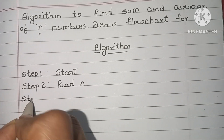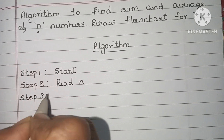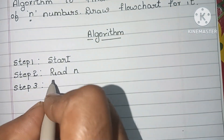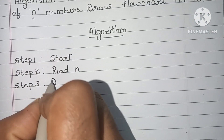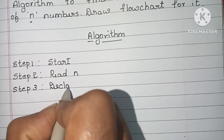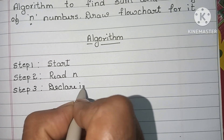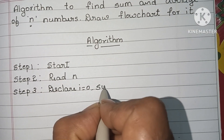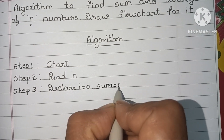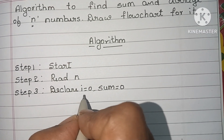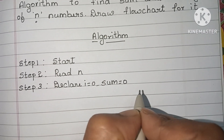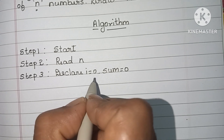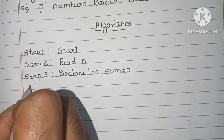Step 3: we have to declare the value of i and sum. Initially, i is equal to 0 and sum is equal to 0.